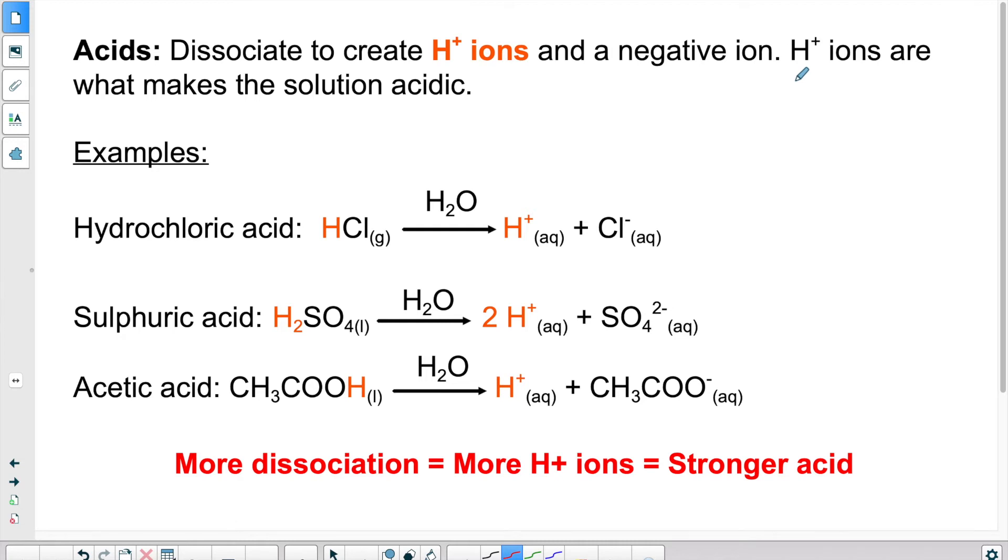And the more H's, or H plus I should say, are present, the more acidic a substance will be. It's always the same rule. More ions, more electricity. So more ions, more acidic, more electricity can flow.